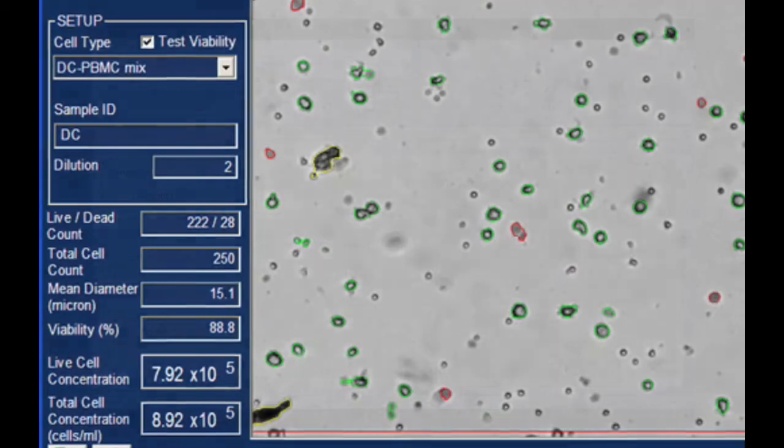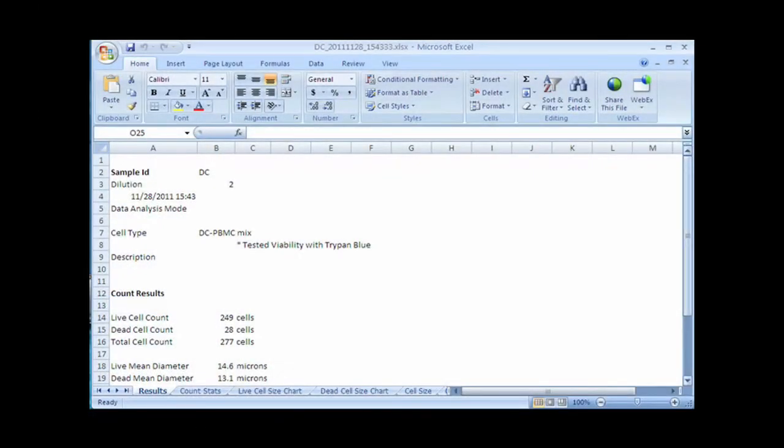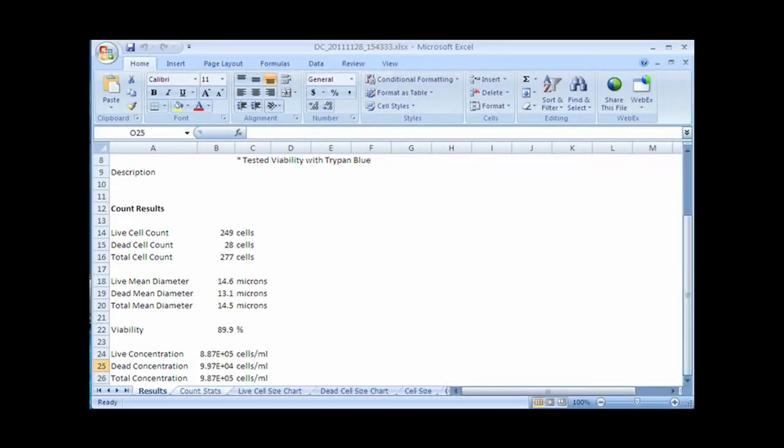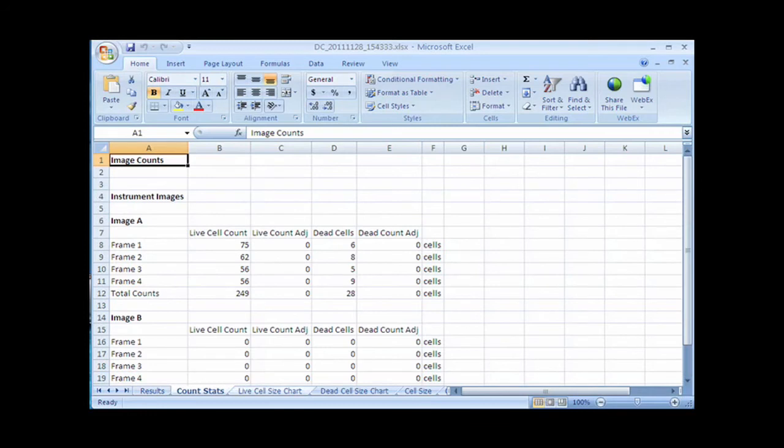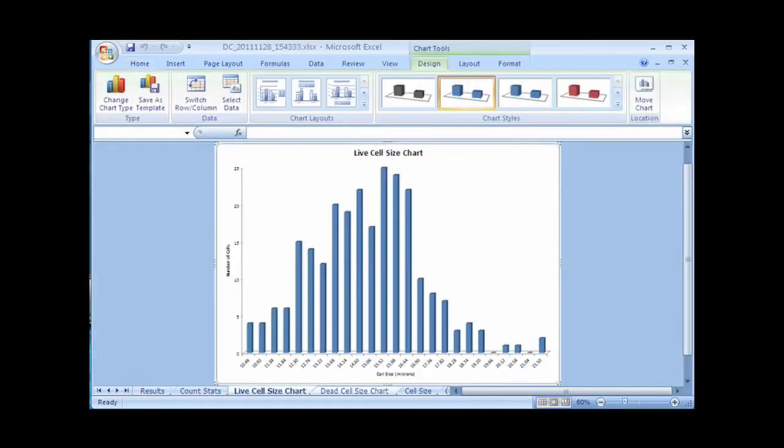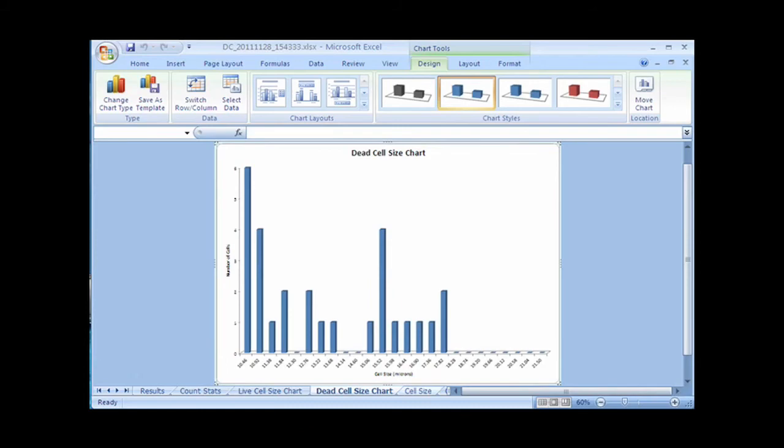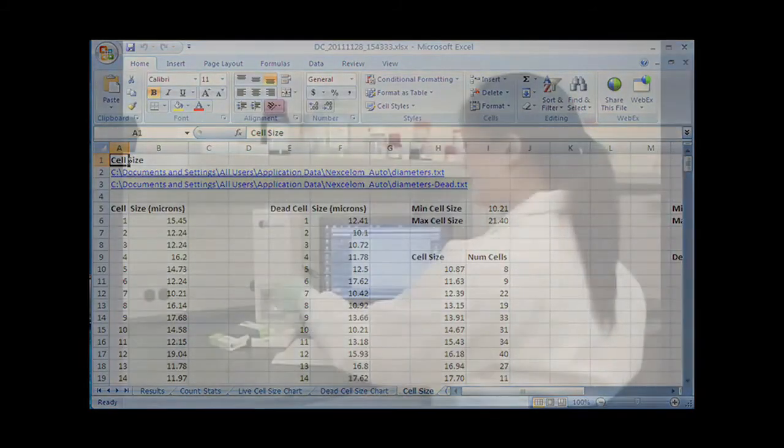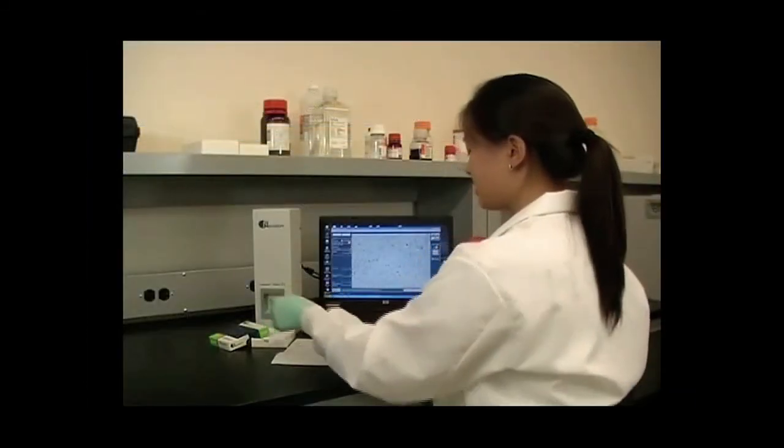The cell images and results table can be exported for data archiving or presentation. After removing the disposable cellometer cell counting chamber, the Auto-T4 is ready to analyze the next sample. No washing or instrument setup is required.